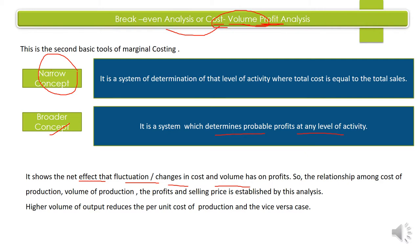यह analysis relationship establish करती है cost of production, volume of production, profits, और selling price के बीच में। जितना ज़्यादा volume of output होगा उतनी per unit cost कम होगी, and vice versa — और उसी के accordingly आपका profit भी change होगा।